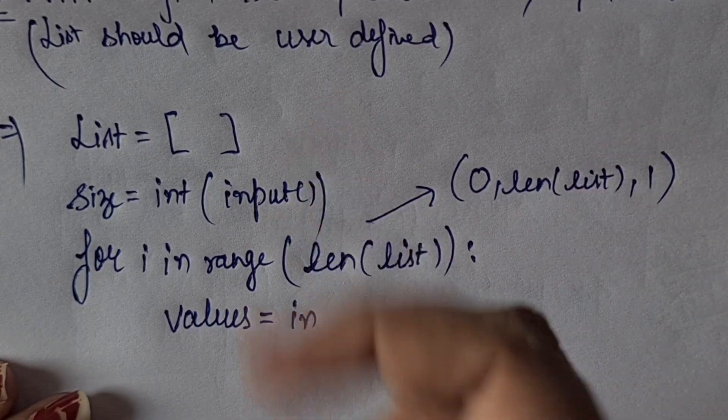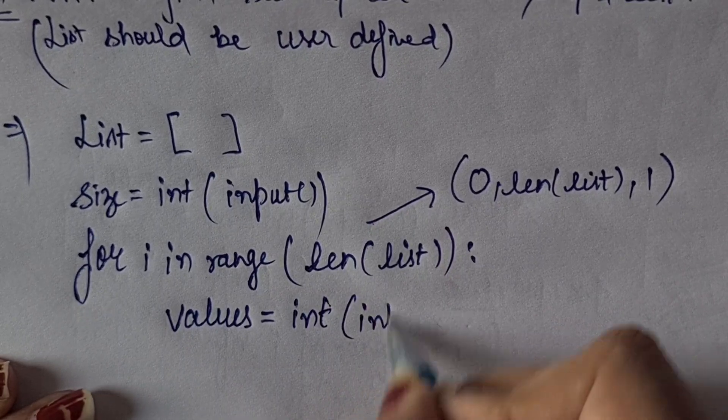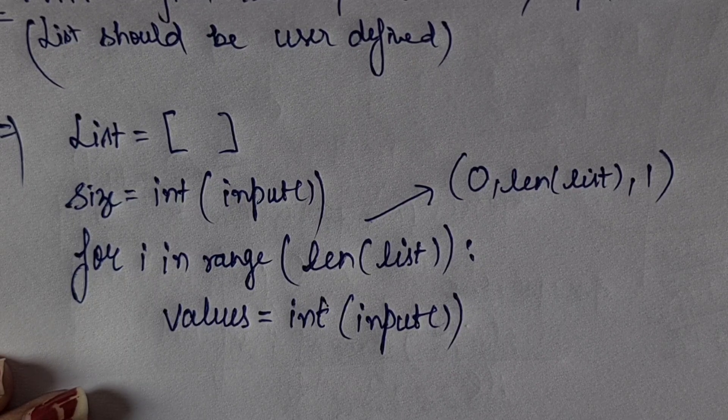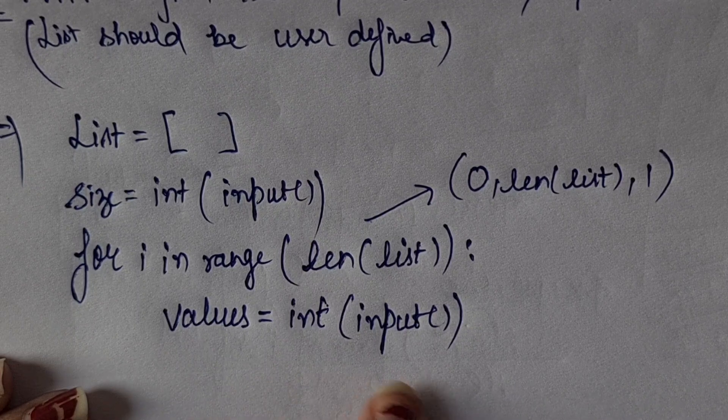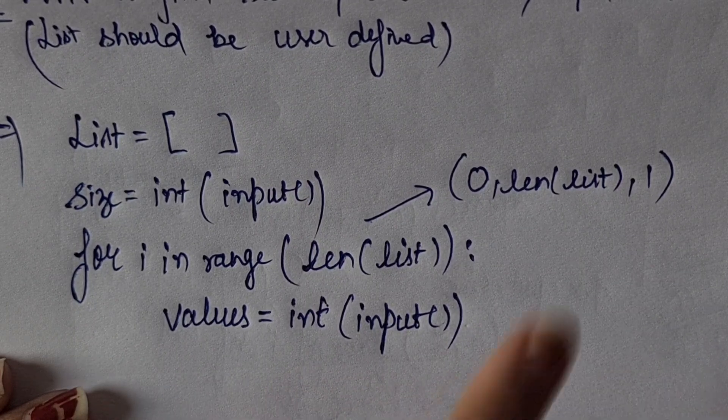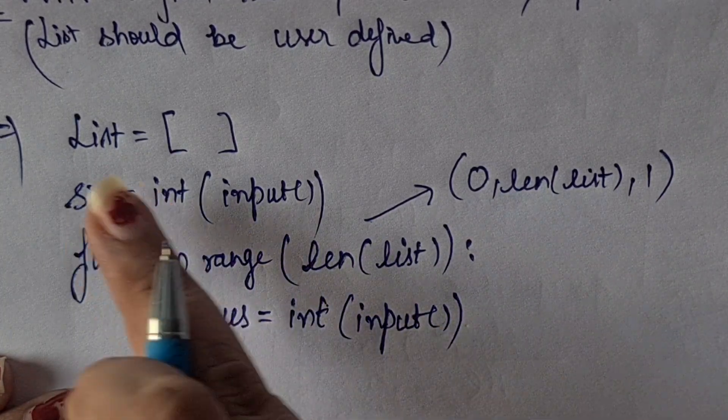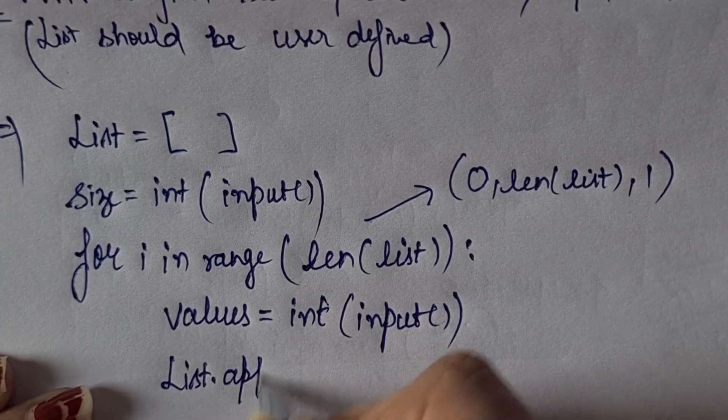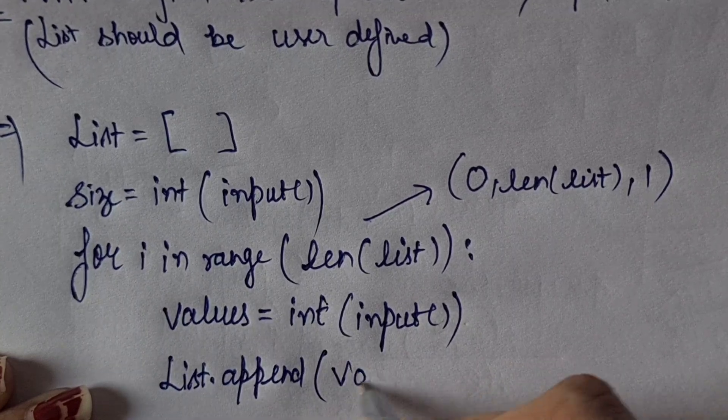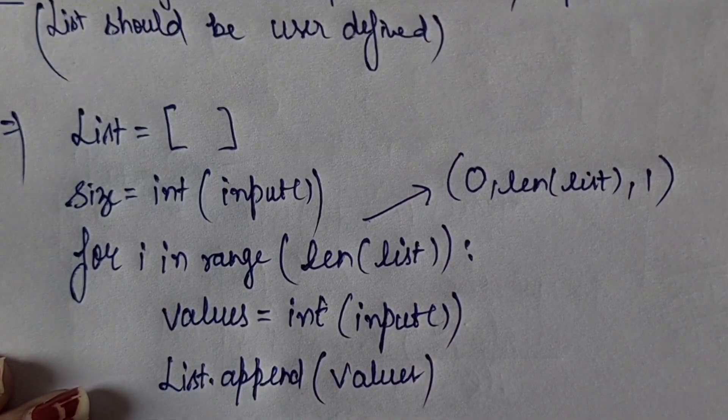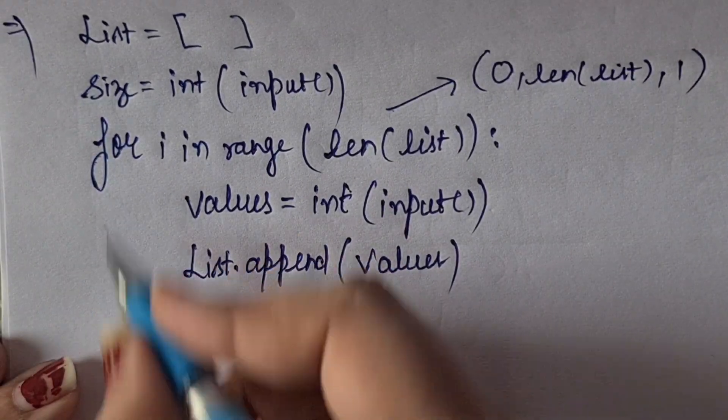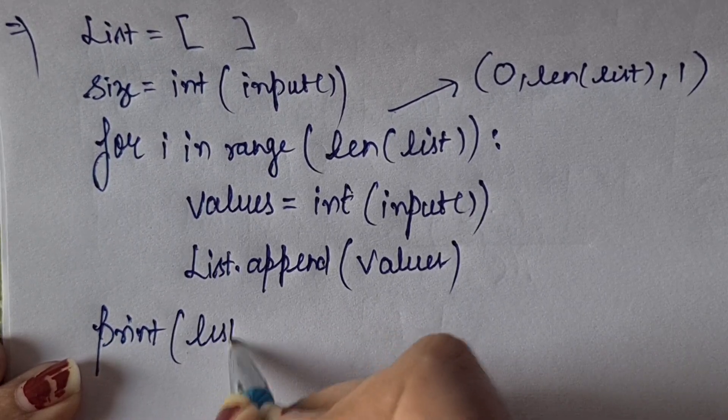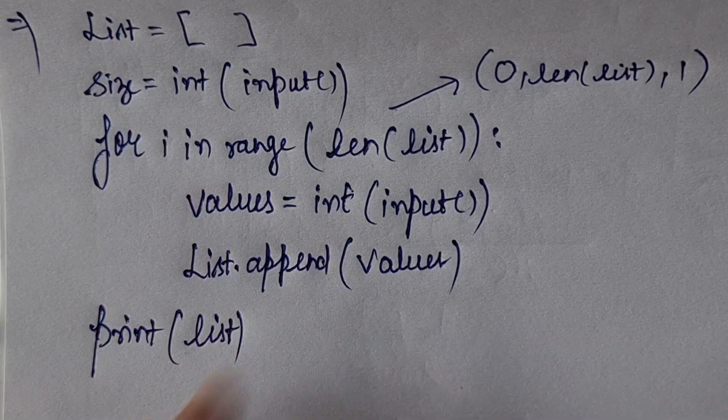Now values should always be integer type because obviously I can't get sum of strings, numbers should be summed. So values equals int input. What will the user do? User will give the value which will be appended in the list. So we use the append function: list.append(values). When the loop completes, I will print the list.